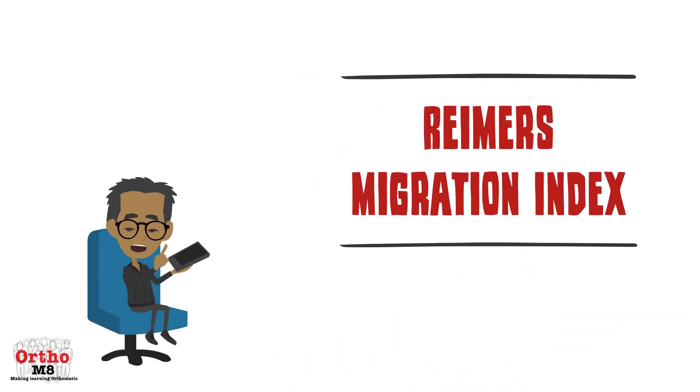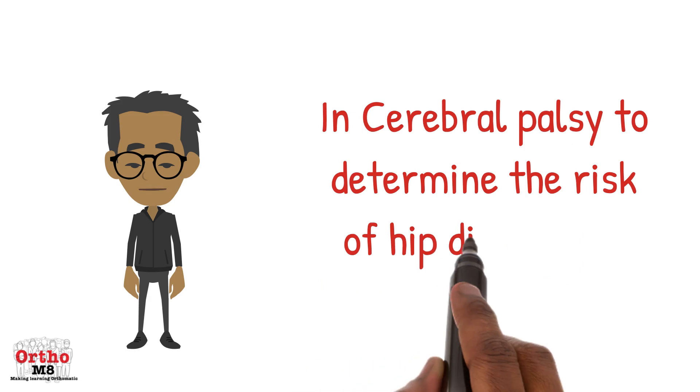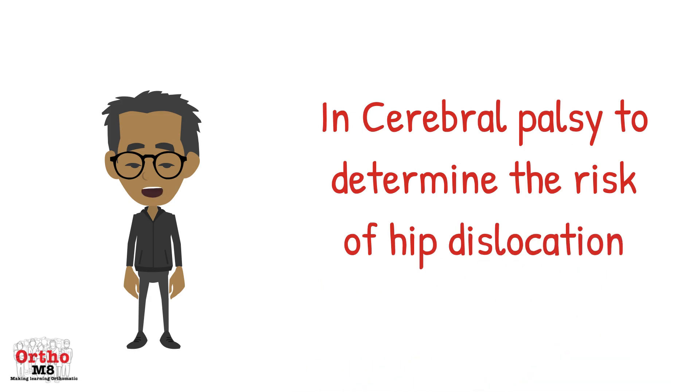Today's topic is the Rhymer Migration Index. This is used in patients with cerebral palsy to determine the risk of hip dislocation.